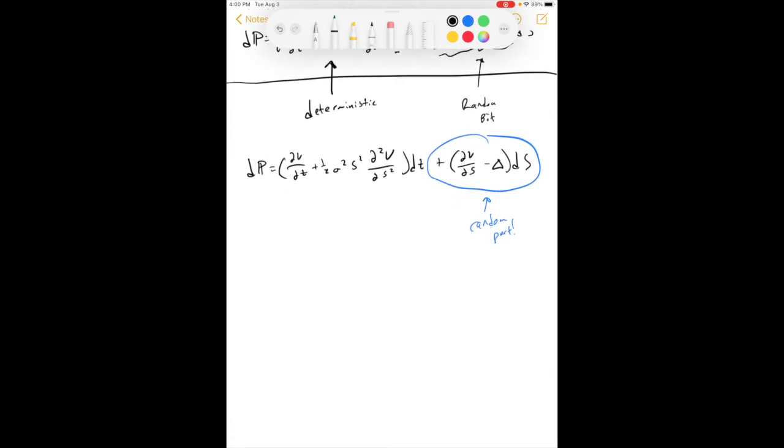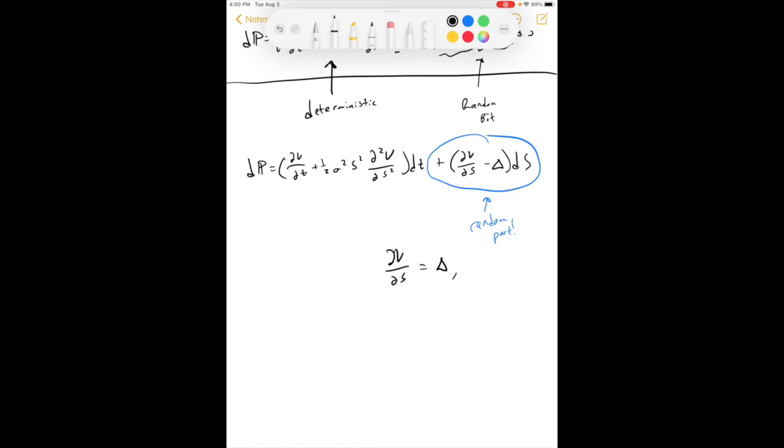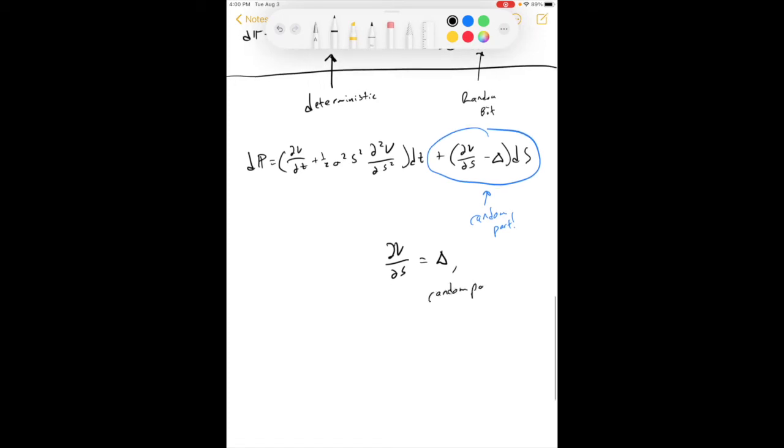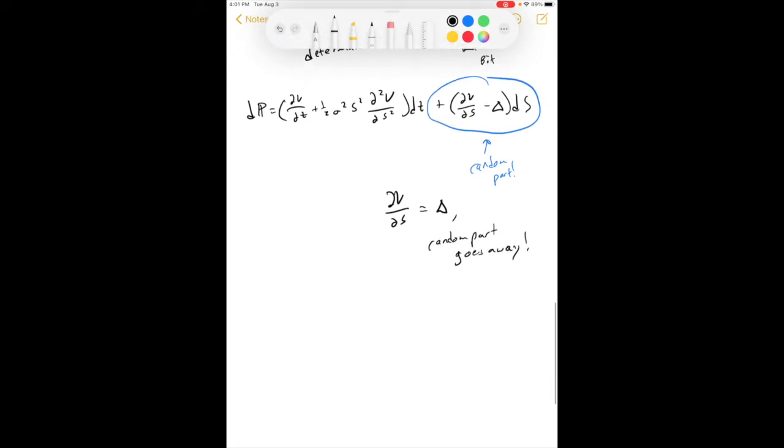This is the random part. But look at what's inside the random part. If we can set dv/ds equal to delta, then the random part will go away. And that idea is called delta hedging. Okay, this is called delta hedging. And it is an incredibly important concept, right? We use it all the time and it's really what makes Black-Scholes work.